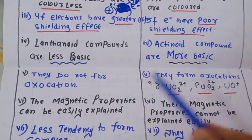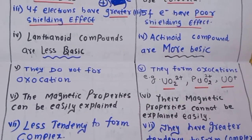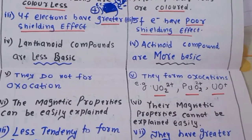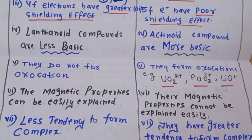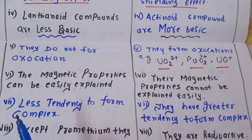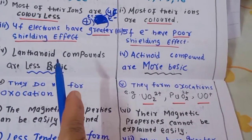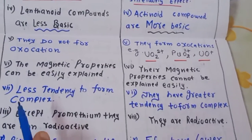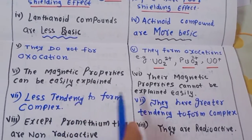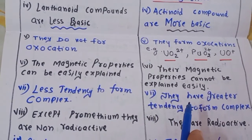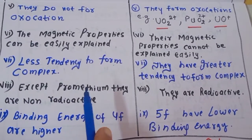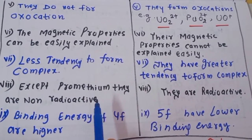Fifth difference: the magnetic properties of lanthanides can be explained easily — all are paramagnetic in nature. In contrast, the magnetic properties of actinides cannot be easily explained due to their more complex electronic structures. Sixth difference: lanthanides have a lesser tendency to form coordination complexes, while actinides have a greater tendency to form complexes.